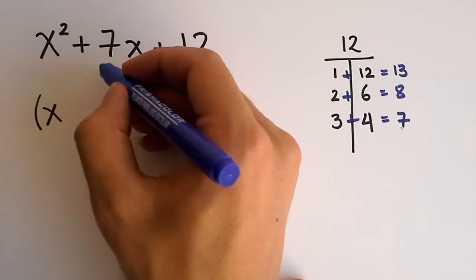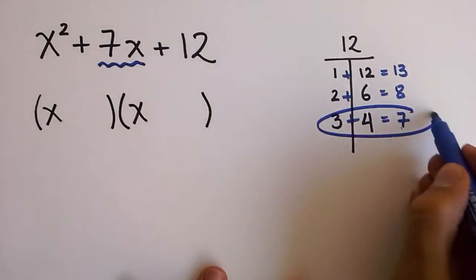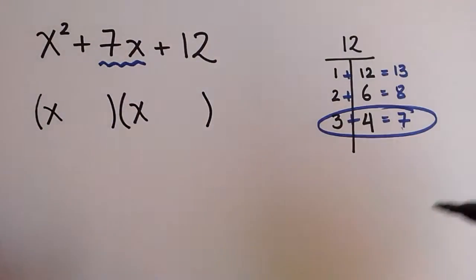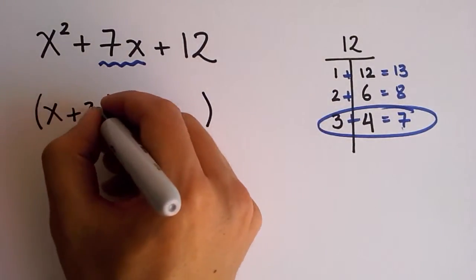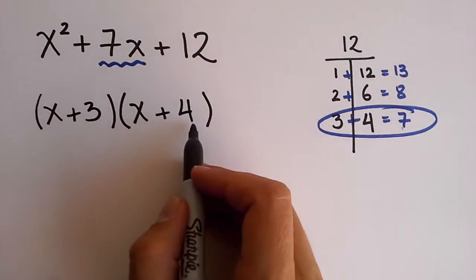Notice that the 7 is exactly this 7 that you have here in the middle. So these two terms that you found here are the numbers that should become part of your parentheses. Exactly with the same signs. Notice that the two of them were positive, so here I write positive 3 and positive 4.